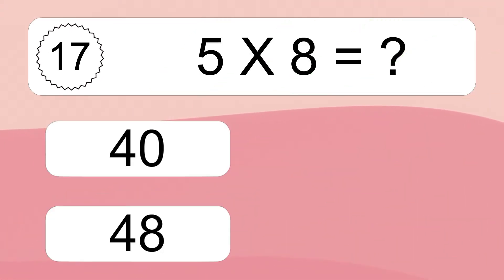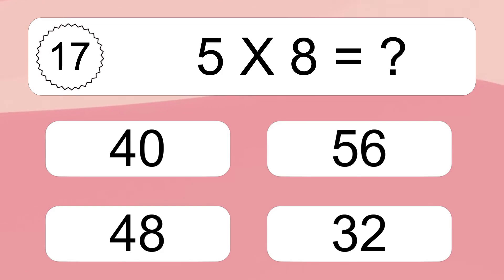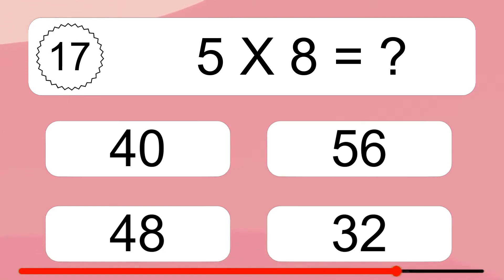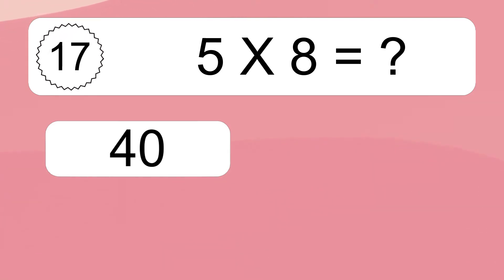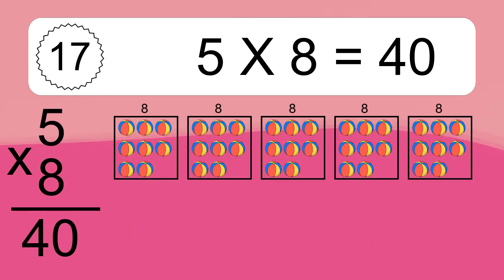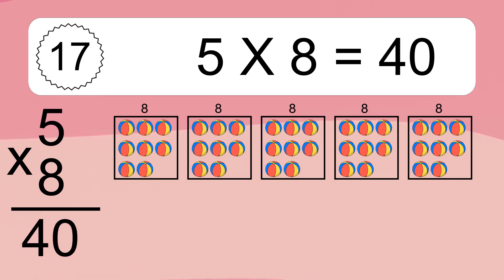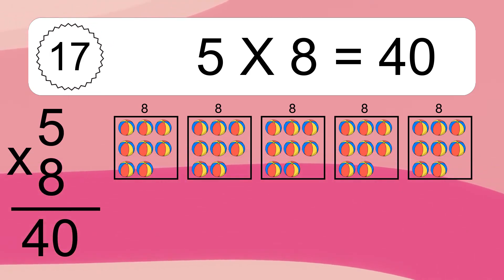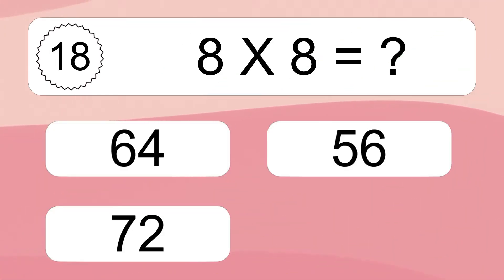5 times 8 equals what? 5 times 8 equals 40. We have 5 boxes, and each box has 8 colorful balls inside. If you count all the balls in all the boxes together, you will have 5 times 8 balls. This equals 40 balls.